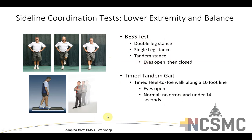You can also use a timed tandem gait. Have the athlete walk heel-to-toe along a 10-foot line, walk one direction, quickly turn, and walk the other direction as fast as possible. They should accomplish that under 14 seconds with no errors — meaning they're not stepping off the line. That would be a normal test.